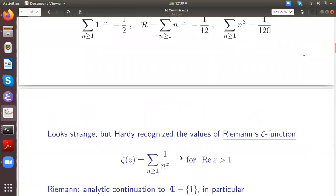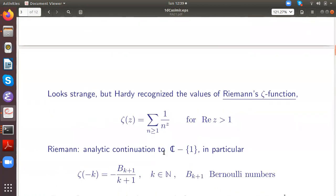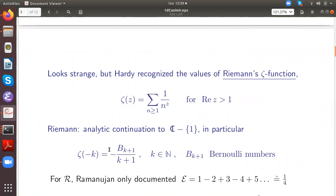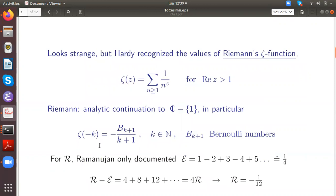This looks strange to us, but Hardy recognized that actually these are the values of Riemann's zeta function. As you know, for real part larger than one, it is given by this convergent series. Riemann had already in the 19th century performed the analytic continuation to the complex plane except for the number one. If you use negative integers for the arguments, then you get indeed the same numbers that Ramanujan had derived without knowing anything about the zeta function.